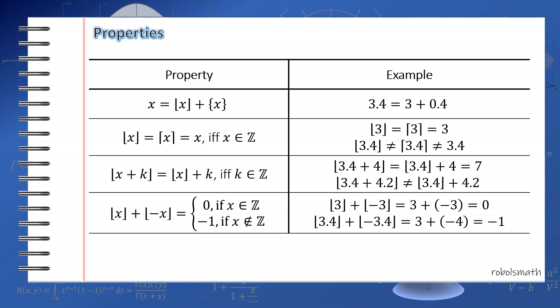And then another one is, if you get the floor of x plus k, it will be the floor of x plus k, if and only if k is an integer. So for example, 3.4 plus 4 is equal to the floor of 3.4 plus 4, and that's equal to 7. However, you can't do that if it's not an integer, I mean k is not an integer.